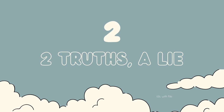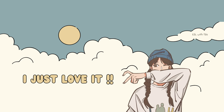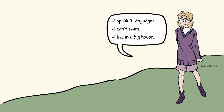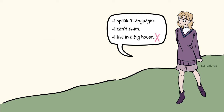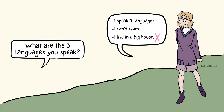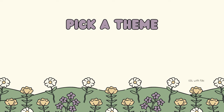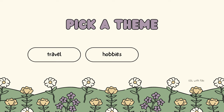The second activity is Two Truths and a Lie. The student says three statements about themselves — two true and one lie — and you have to guess which one is the lie. After the guess, the student reveals which statement was the lie, and then we switch roles. I love to ask follow-up questions and I absolutely encourage you to as well. I also encourage you to use a theme — for example, travel, hobbies, or family — for every round, to target specific vocabulary and make things more exciting.